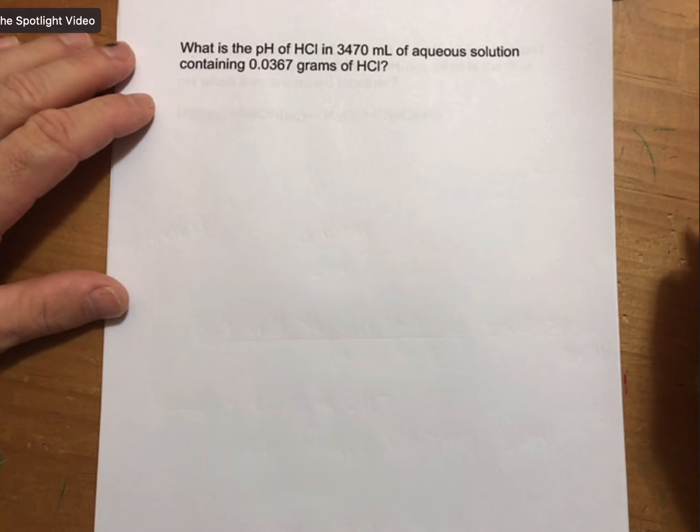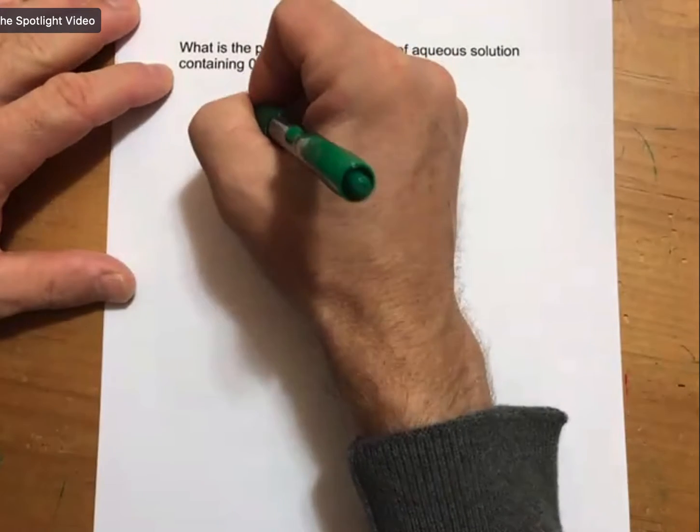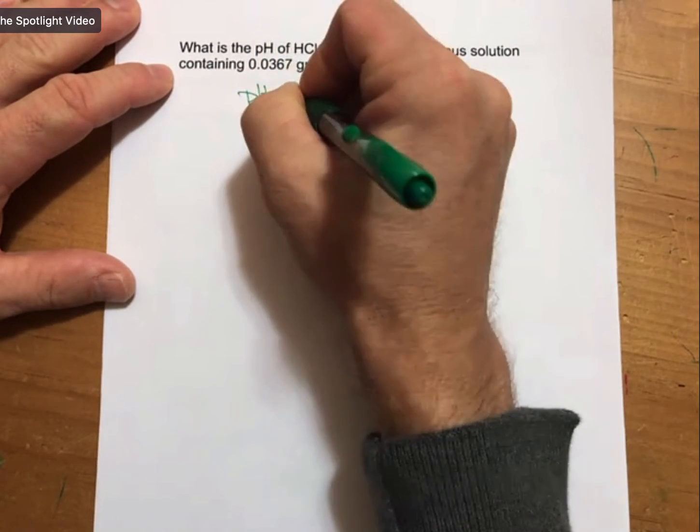It says, what is the pH of HCl in 3,470 milliliters of aqueous solution containing 0.0367 grams of HCl? So this is going to be very similar to the last one we worked, except that now we're working with an acid.